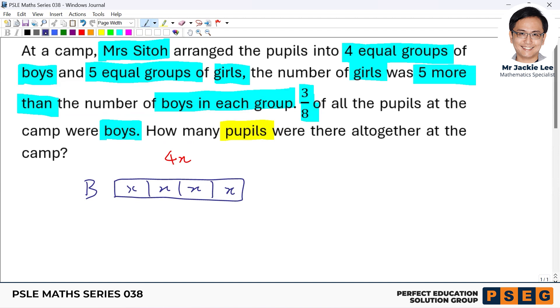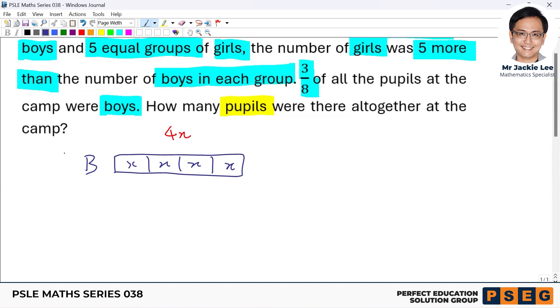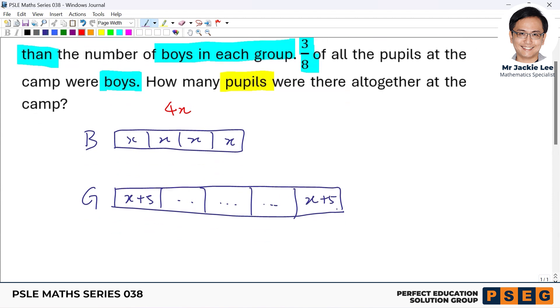Then for the girls' side, it would be like this. We have five groups. At each group, we have five more students than the boys. So we'll end up like this. So five groups: one, two, three, four, five. Then each one is X plus 5. All the way, all these just repeat until the last one, so X plus 5. So collectively here, I think we have 5X plus 25. Five X plus 25.